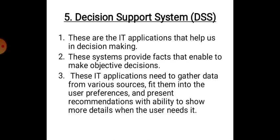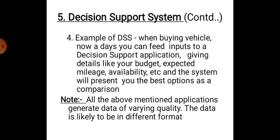An example of a decision support system: when buying a vehicle, you can go to the shop and physically observe the vehicle, or you can take help of a decision support system. You can feed inputs to the DSS application — details like your budget, expected mileage, availability, etc. — and the system will present you with the best options as a comparison.